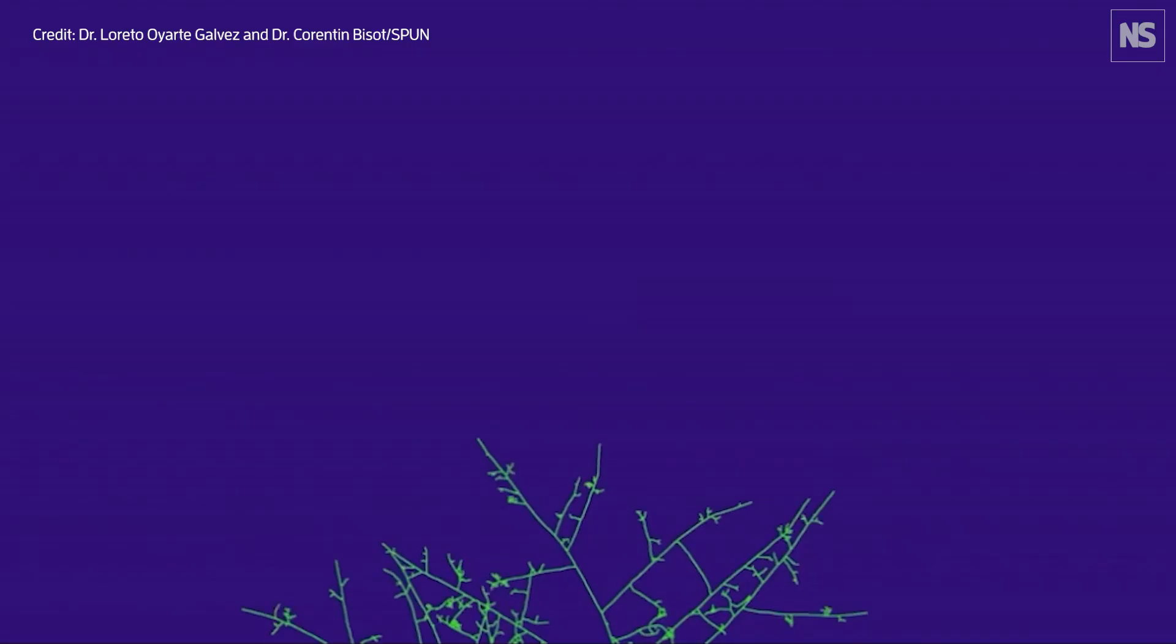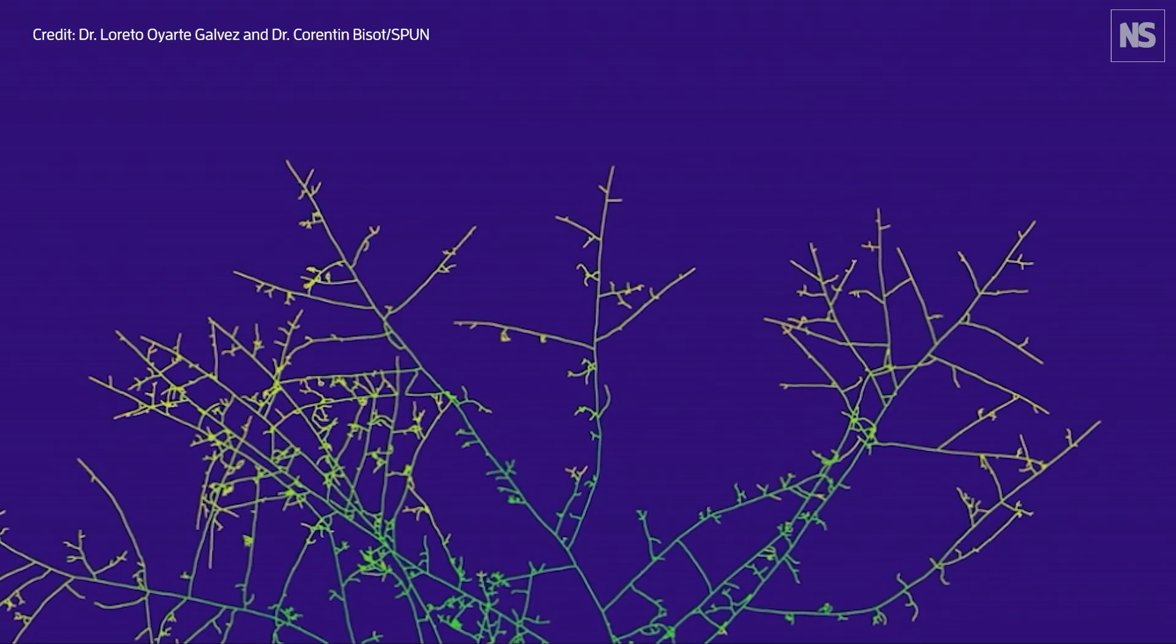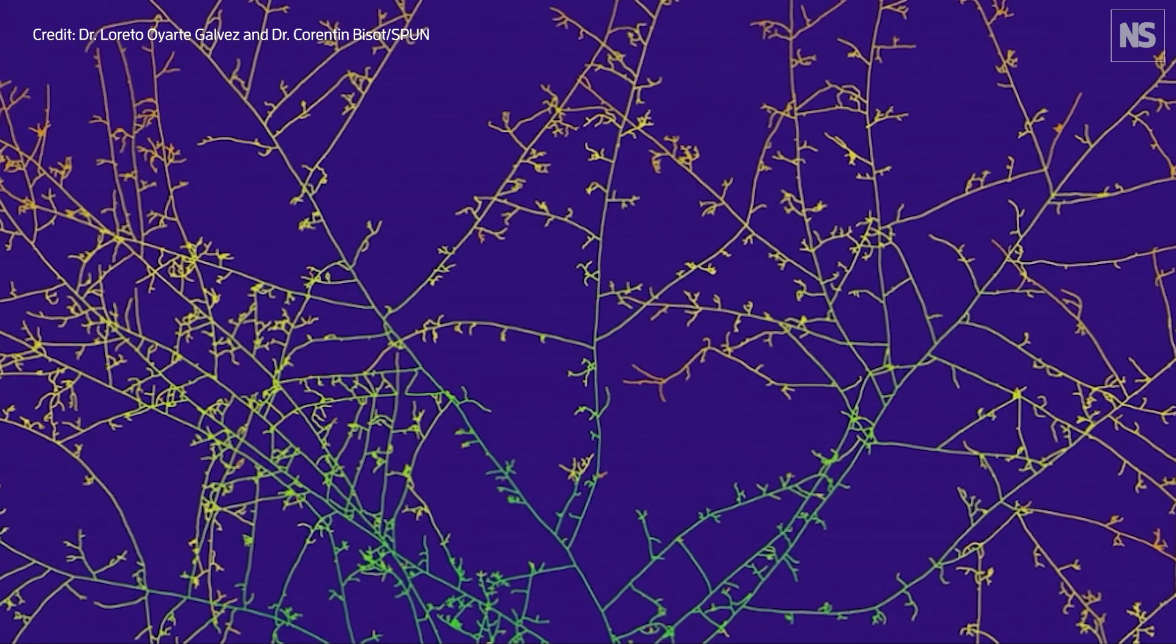So they first have to build this physical network foraging for nutrients like phosphorus and nitrogen. They need to collect that, bring that back through the network to the plant root and then get carbon in exchange for that.